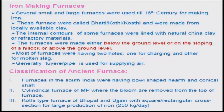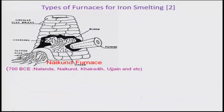The classification of ancient Indian furnaces includes: furnaces in south India having a bowl-shaped hearth and conical shaft; cylindrical furnaces of Madhya Pradesh where bloom was removed from the top; and the Koti type furnace of Bhopal-Vizain with a square or rectangular cross section for large production — something like 250 kg per day, which is quite huge compared to other furnaces of that time. There is also the Naikund furnace, which is quite old, going back to 700 BC.